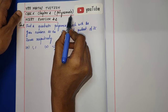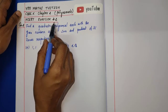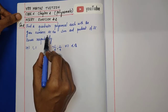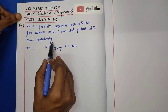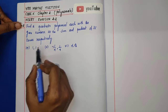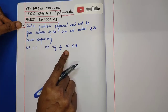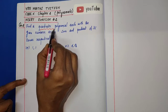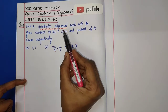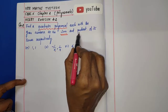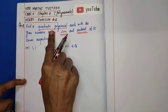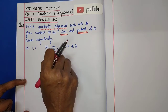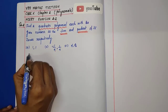Chapter 2 Polynomials, NCERT Exercise 2.2, Question No. 2: Find a quadratic polynomial with given numbers as the sum and product of its zeros respectively. The given information is the sum of zeros and product of zeros. Our aim is to form the quadratic polynomial.